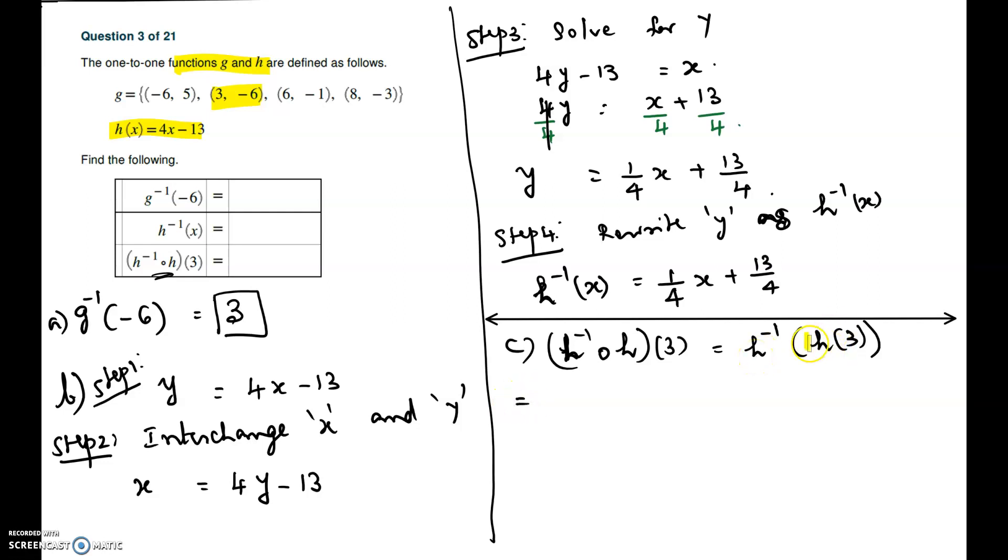We have to first evaluate h of 3, keeping the outside function as is, which is h inverse. Now we are going to do h at 3. You have to go to the h function here and replace the x with the number inside, which is 3.